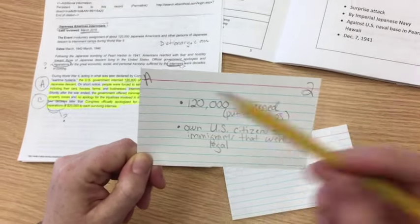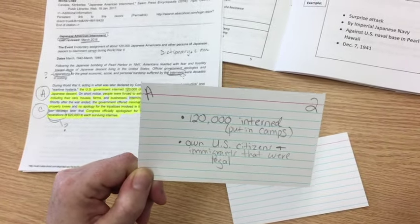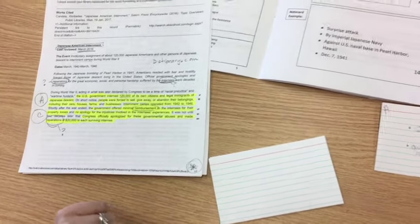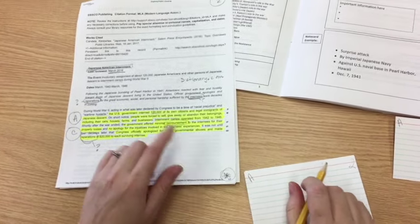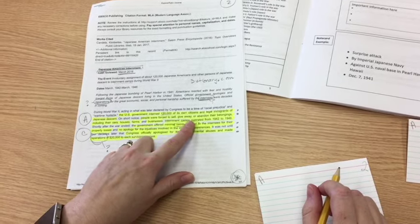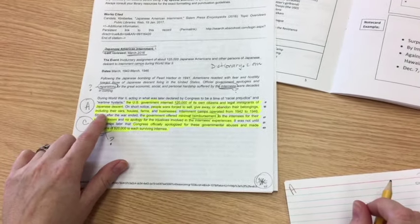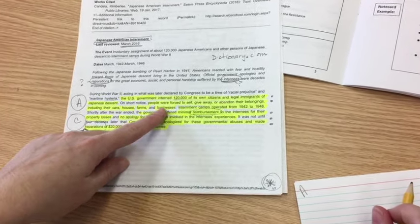They both have to do with main point A, and they both have to do with being put in internment camps. So one down. I look to my next sentence. Right off, I put that it's main point A because I've already identified that. And it's from source two. People were forced to sell, give away, or abandon their belongings, including cars, houses, farms, and businesses.